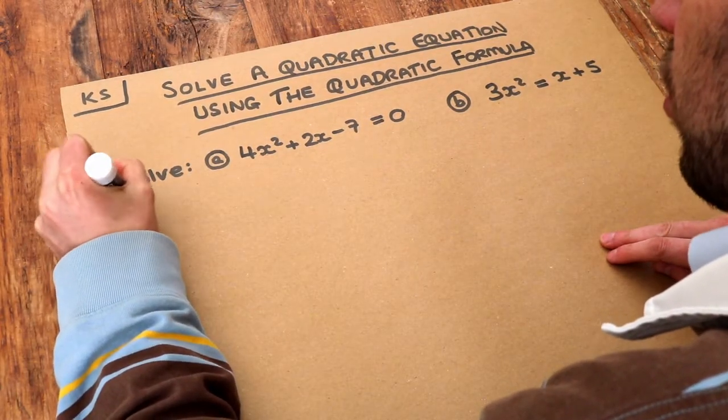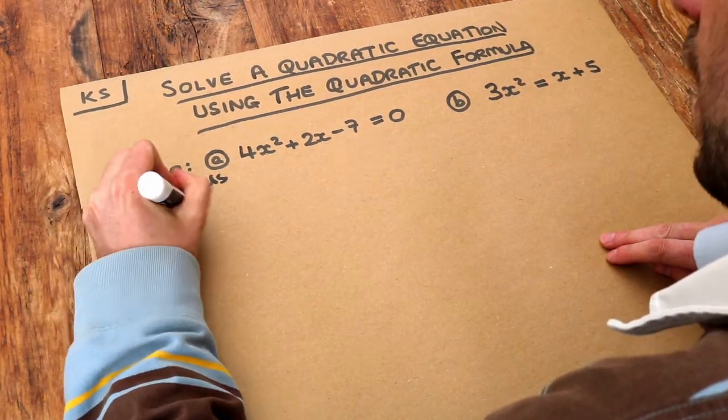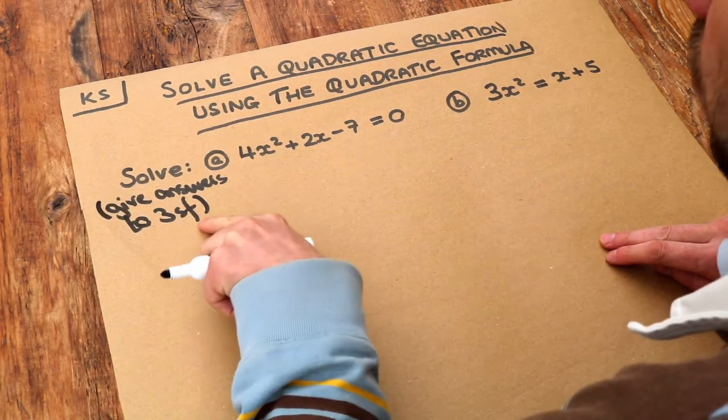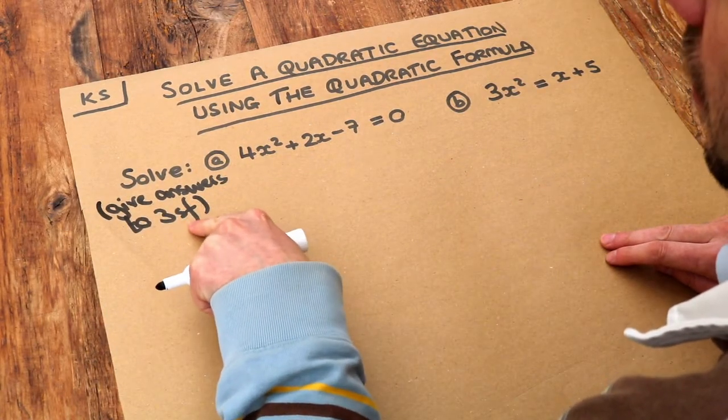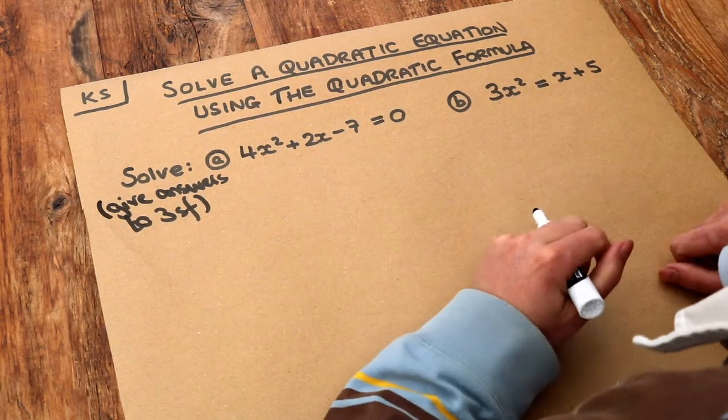answer to three significant figures, and that's the clue that you have to use a quadratic formula because that basically tells you that you're not going to get nice answers if you're going to have to round some nasty decimal answer.